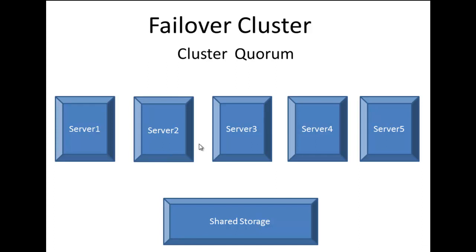Each element can cast one vote to determine whether the cluster can run. Whether a cluster has quorum to function properly is determined by the majority of the voting elements in the active cluster membership. As the administrator, you can configure the quorum or you can have what we call a dynamic quorum. With the dynamic quorum set, the administrator does not have to configure the quorum. The quorum will adjust according to the number of nodes that it has. For example, if two nodes go offline and you have dynamic quorum configured, then the quorum will be adjusted so that the cluster will not fail.